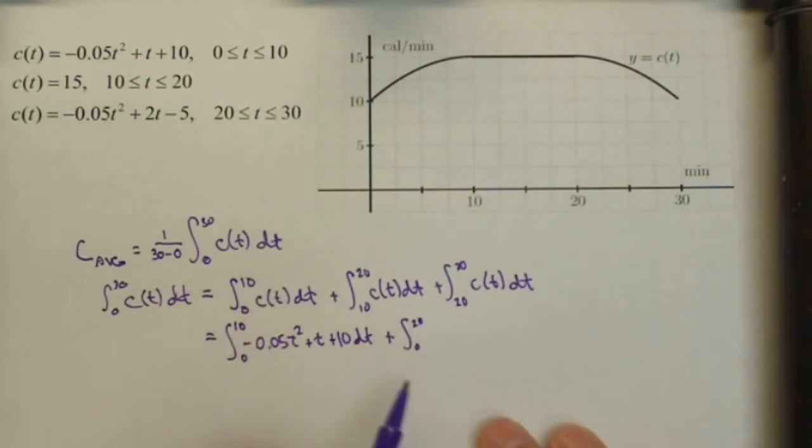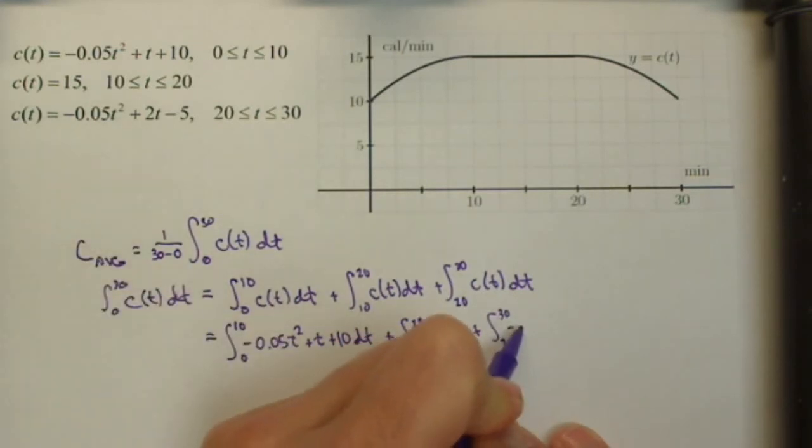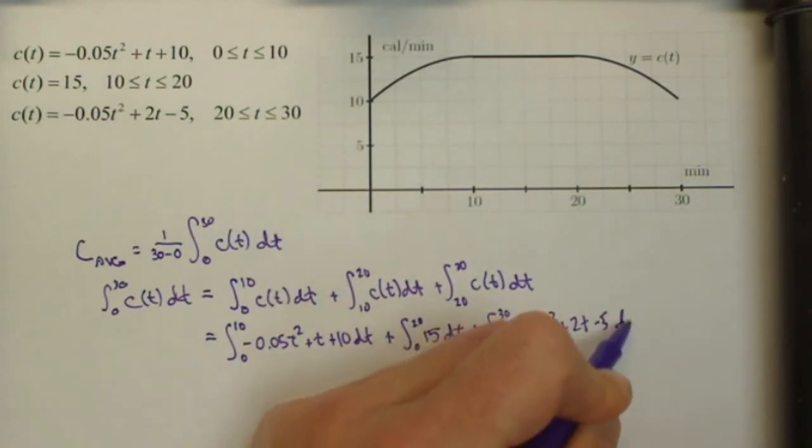We really, as we've seen in previous sections, don't need to do this with an anti-derivative, but it's not gonna make it wrong. And then finally, from 20 to 30, C of T is defined as negative 0.05 T squared plus 2T minus 5 DT.